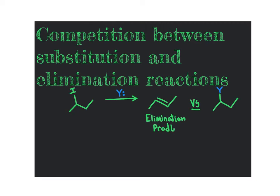The reactants that go into elimination reactions were very similar to those in substitution reactions: you start with a molecule bonded to a good leaving group such as a halogen, reacted with a molecule Y that has a lone pair of electrons. That molecule Y with the lone pair could act as either a base — grabbing a proton — or as a nucleophile, forming a bond to a carbon atom to give the substitution product. If Y acts as a base, you instead get the elimination product.